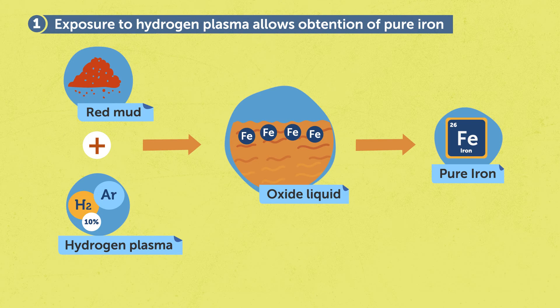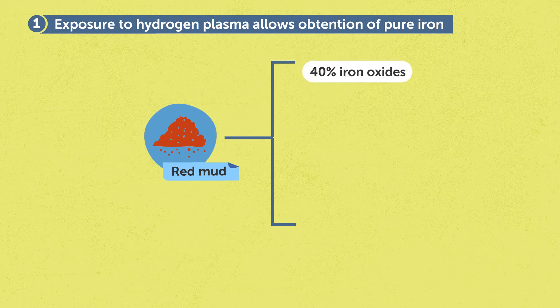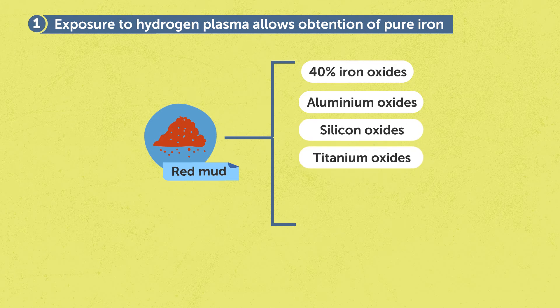Specifically for our experiments, we use red mud which originally contained 40% of iron oxides. The remaining parts were aluminum oxides, silicon oxides, titanium oxides, calcium and sodium oxides as well.